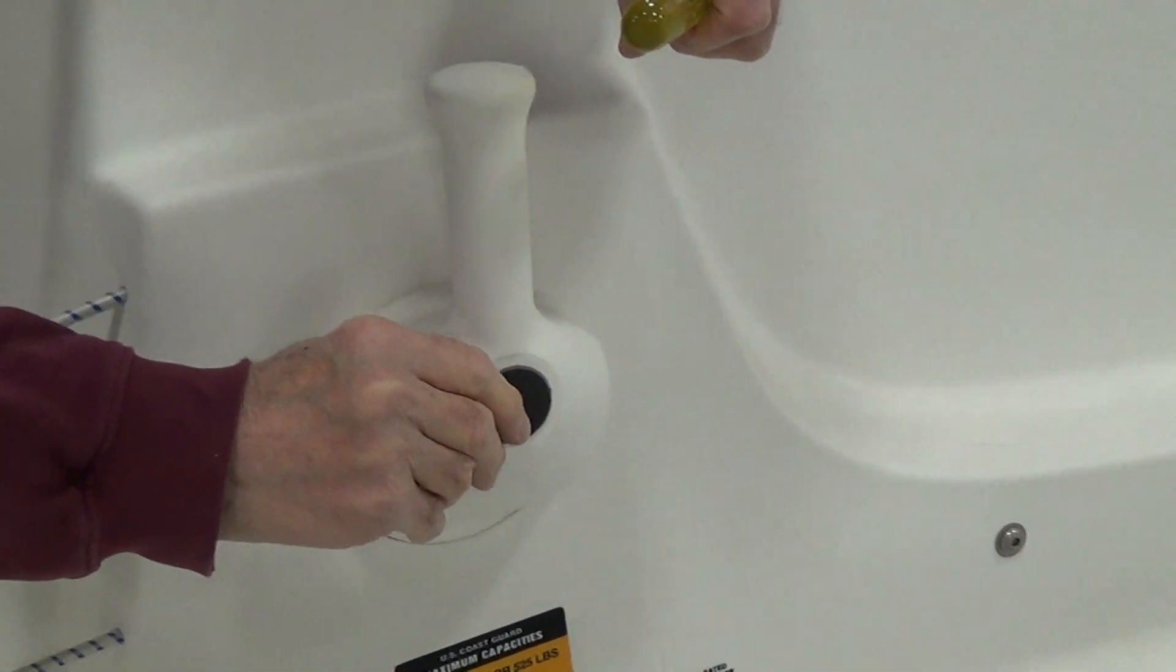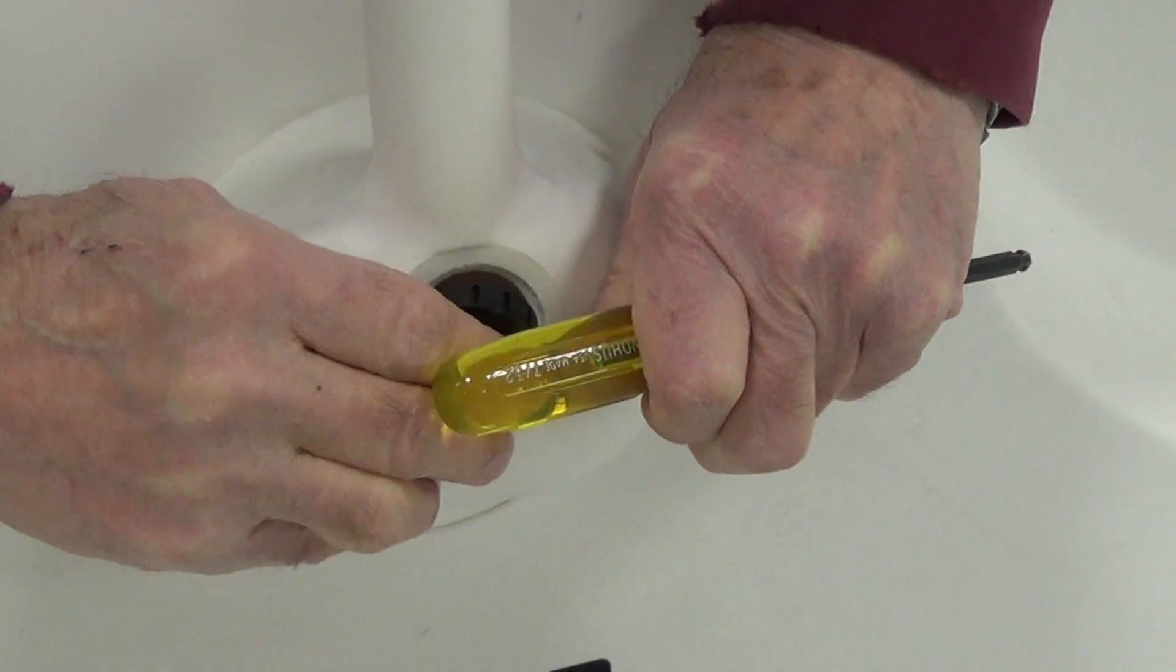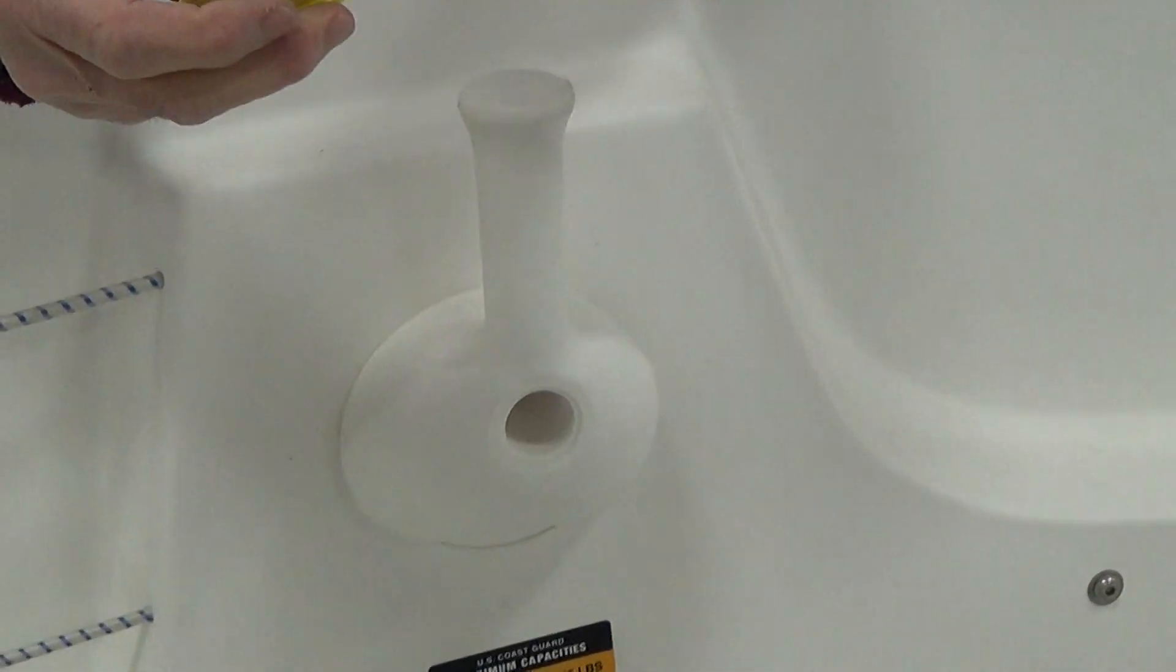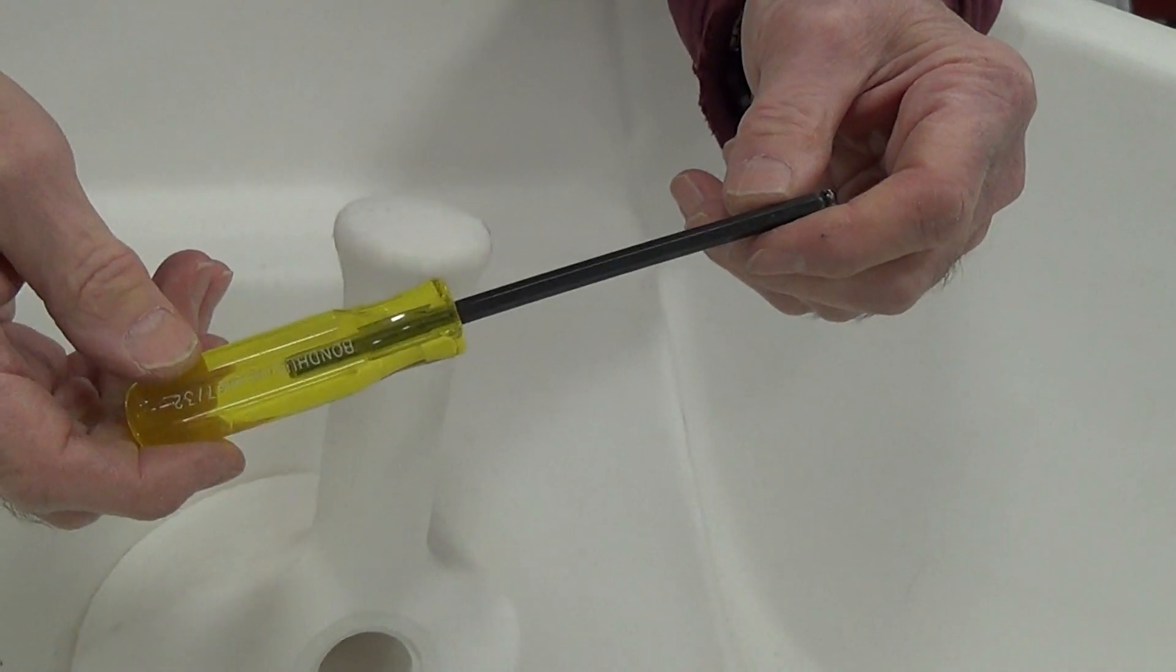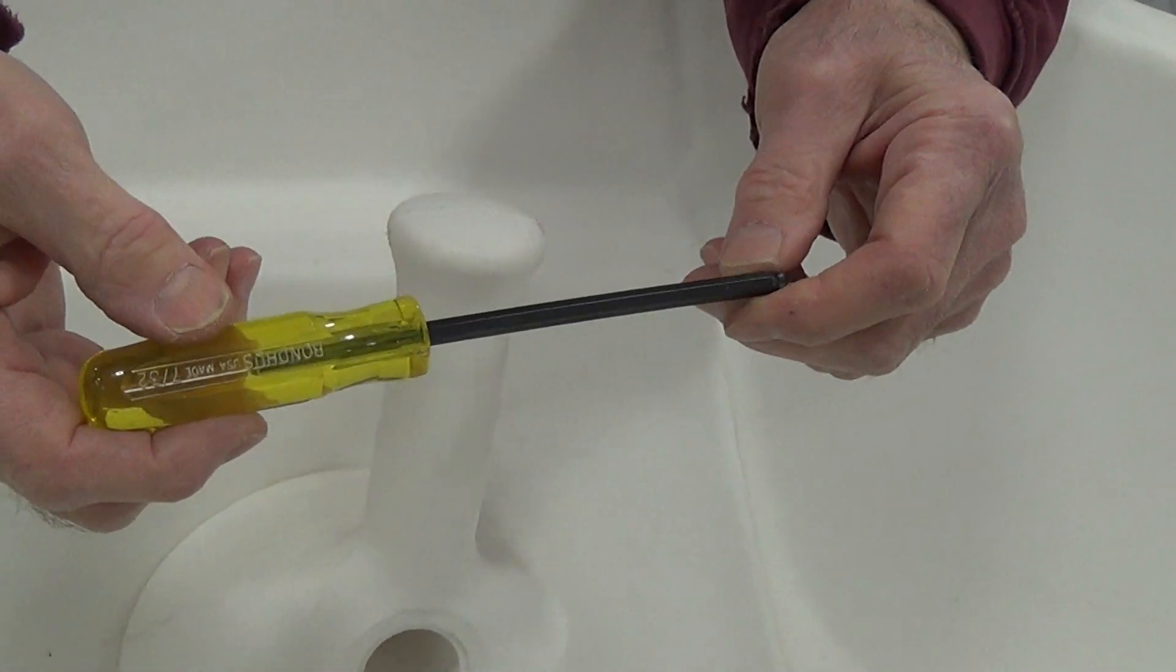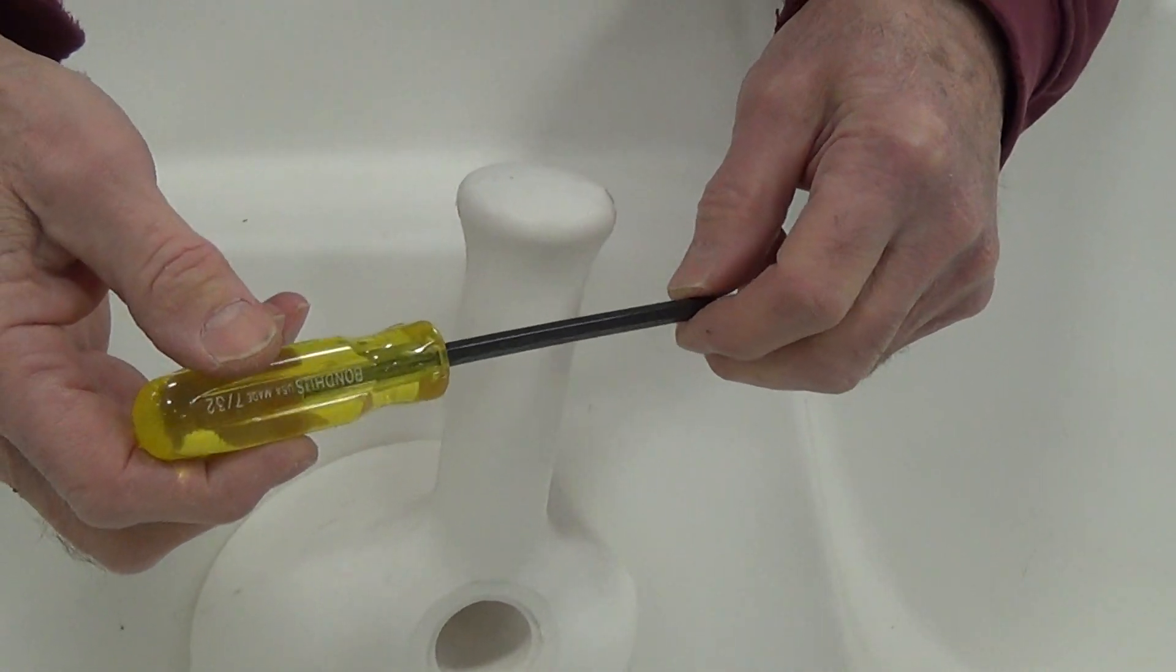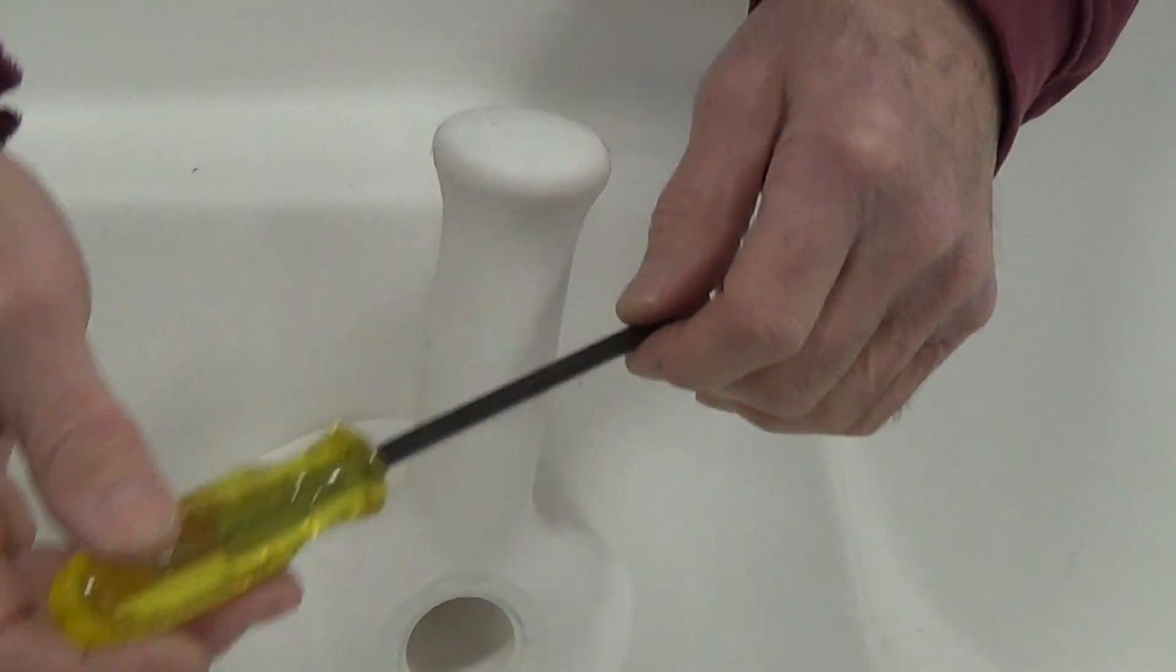First of all, you remove this plug, which is just for aesthetics, right here. Take that plug out of there. And then the tool that you have to have is a 7/32nd Allen wrench. It's got to be a long one. Now, it can be an L-shaped Allen wrench, but it's got to have a long tang on it because you have to reach way down in here.